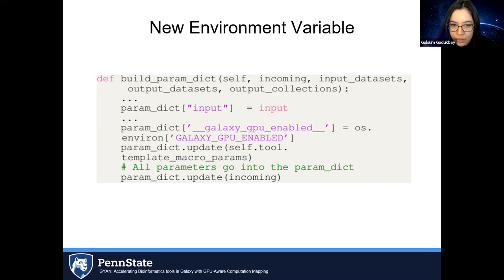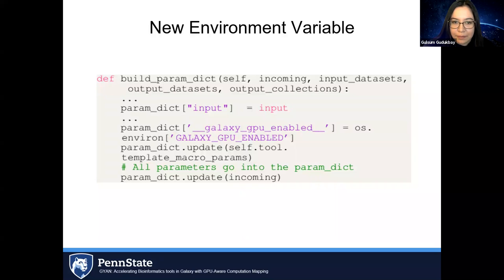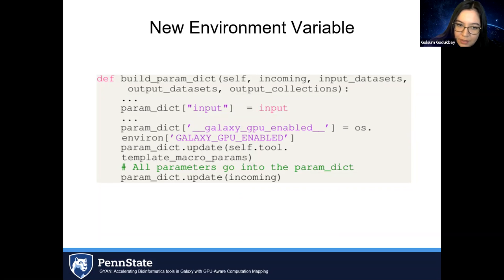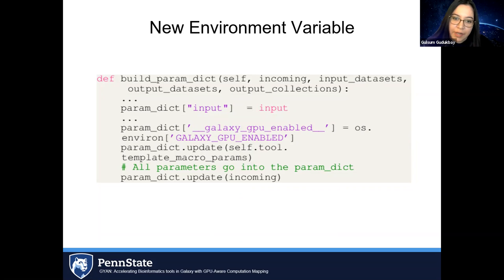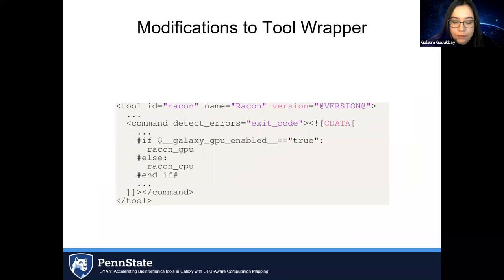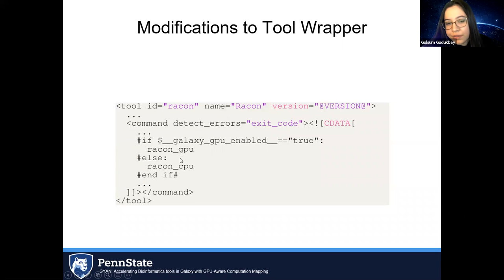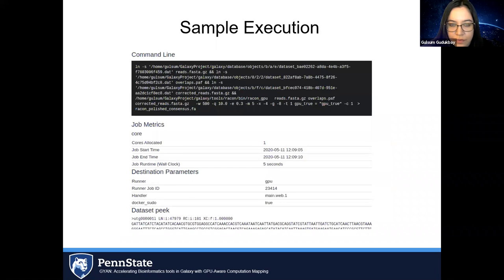To expose the new environment variable to the tool wrapper — since you can't use OS environment variables directly from within the tool XML wrapper files — we found the build_param_dictionary function in evaluation.py and added code to get the environment variable's value from Python and create a parameter dictionary entry for the tool. We can then access that parameter dictionary entry from the tool wrapper file: if it is true, we use the GPU executable of the tool; otherwise we use the CPU executable.